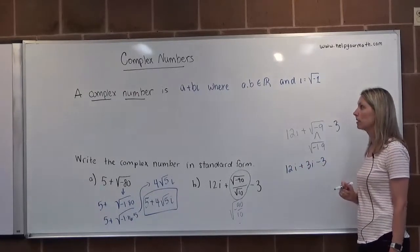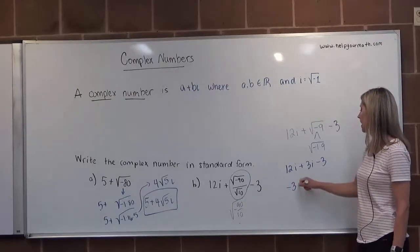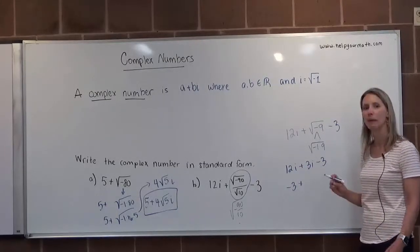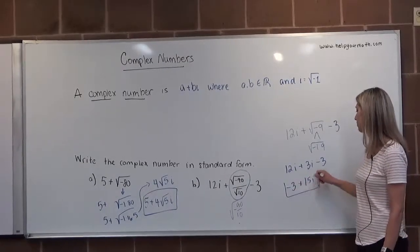Now to get this truly in complex form, we're going to put the real part first, which would be negative three. And then we have two imaginary parts, 12i and 3i, we can combine those to get 15i. So our final answer here will be negative three plus 15i.